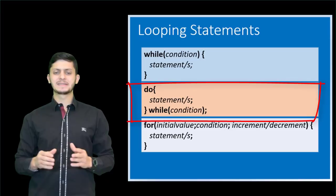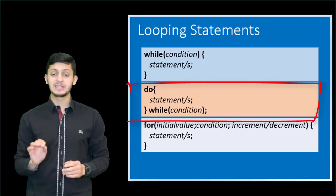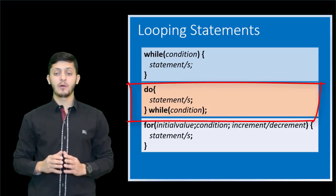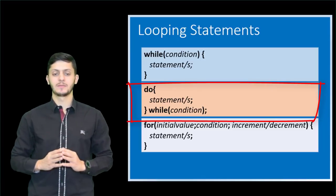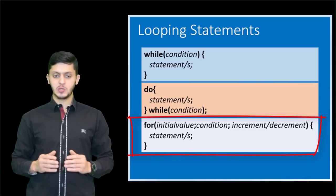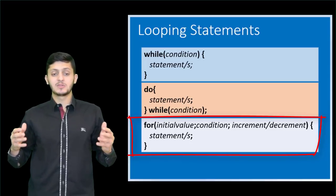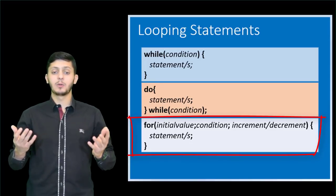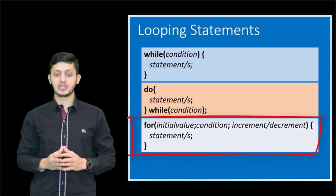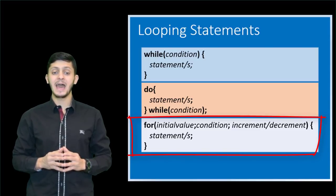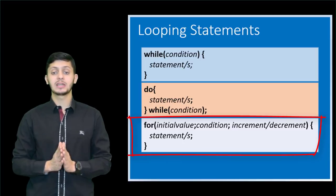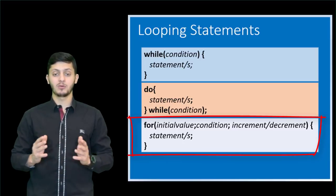A do while loop is similar to while loop except that it executes the block of code at least once before checking the condition. A for loop is good when you know how many times you need to repeat executing a block of code. Beside a condition, it has initialization for the counter and an increment or decrement operation for the counter.